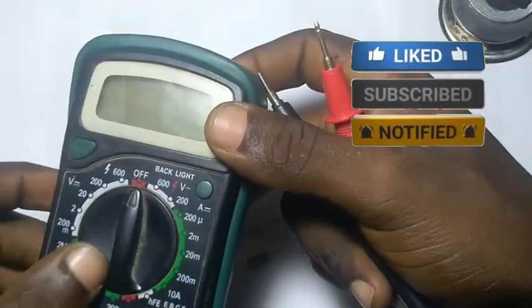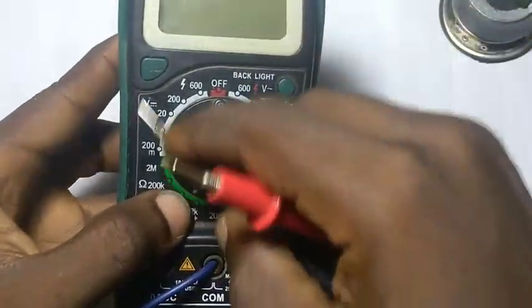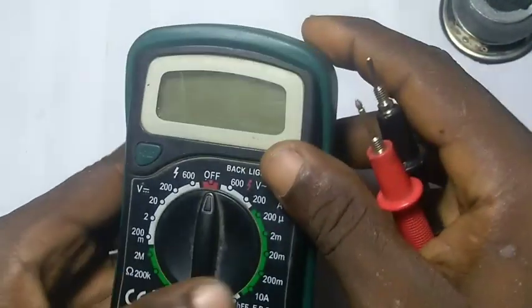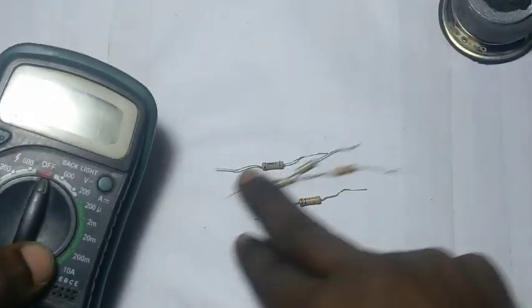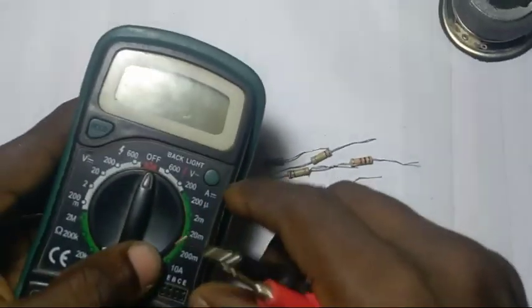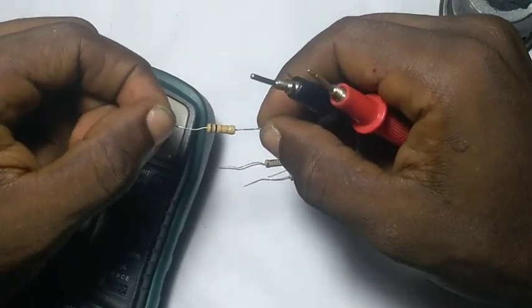If you don't know how to use a multimeter, drop in the comment section. If I have a good number of requests, I'll definitely make a detailed video where I will explain everything a multimeter can do. But for today's video, we'll be looking at how to test the resistor using a multimeter.